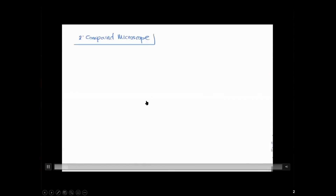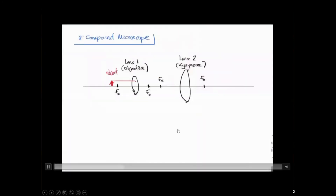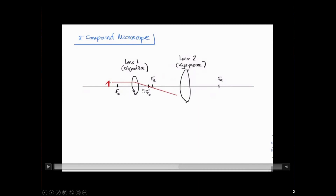Now let's look at a compound microscope — it's the same idea; you can build one using two lenses. The first one is, once again, your objective, and the second one is your eyepiece. You've got focal points on the objective and focal points on the eyepiece. This time the object is located fairly close to the focal point — within the radius of curvature. I'm getting a second eyepiece with a larger focal length and moving the object a little further away. I make sure I get a real image which is inverted, and hopefully larger, forming within the focal length of the eyepiece — which will give us a virtual image at the end.